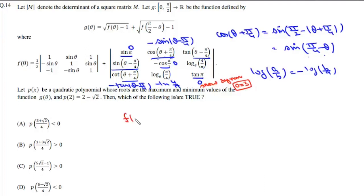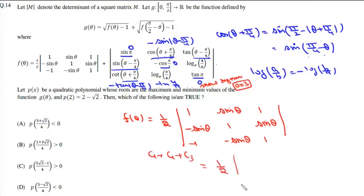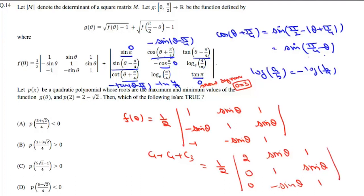So the second part is 0, meaning f(θ) reduces to (1/2) times the determinant with entries: row 1: 1, sin θ, 1; row 2: −sin θ, 1, sin θ; row 3: −1, −sin θ, 1. We apply the column operation C1 → C1 + C3, giving column 1 as (2, 0, 0), and then expand the determinant.